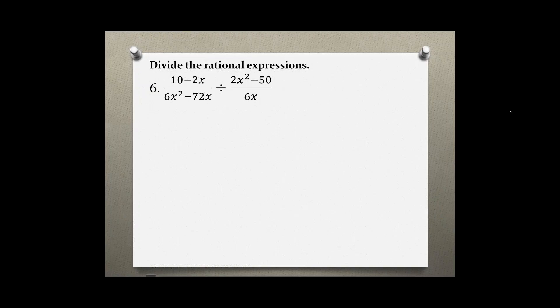Divide the rational expression. This is problem number 6. 10 minus 2x over 6x squared minus 72x divided by 2x squared minus 50 over 6x.